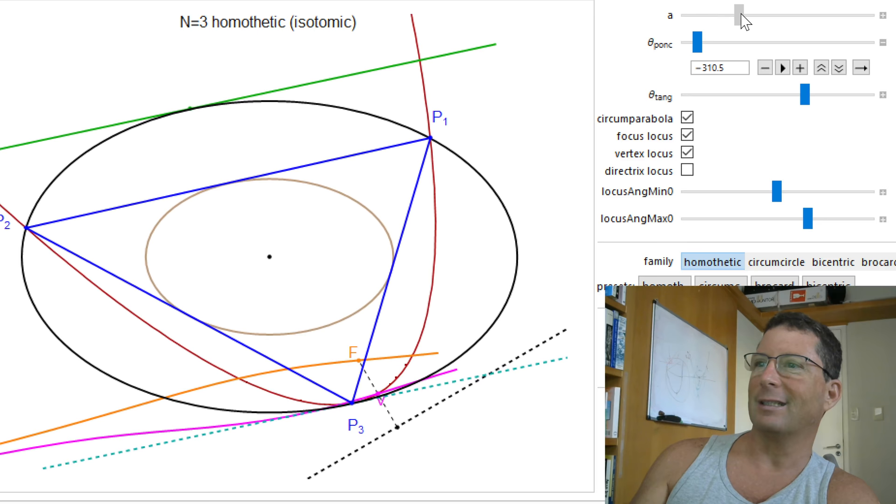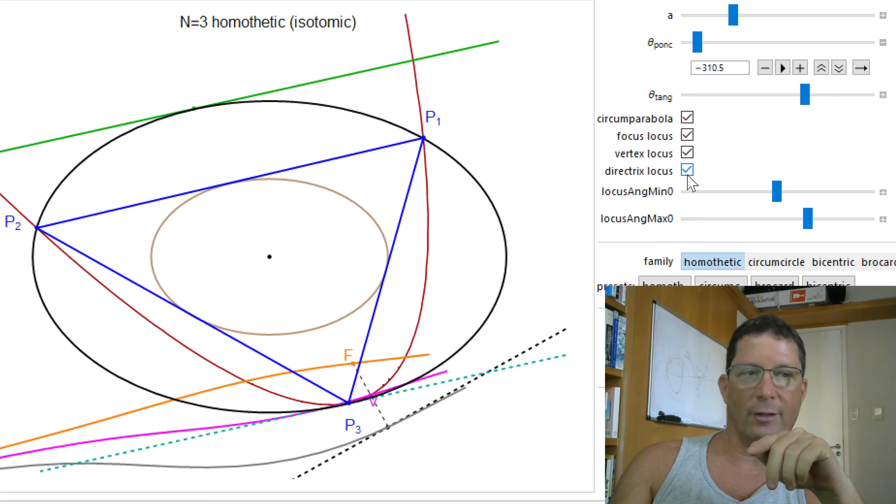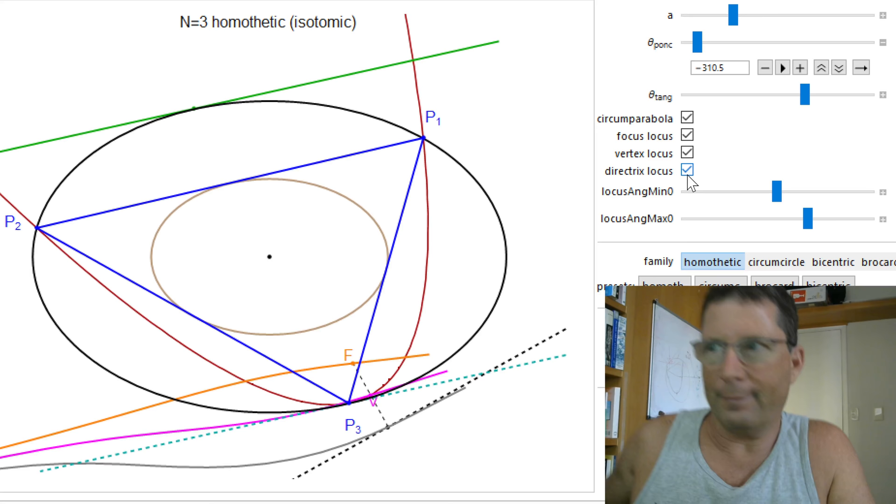So the locus of the vertex seems to be... And maybe this is obvious, but it seems to be tangent to the reflection of the green line about the center as well. And I can also show the locus of the directrix is this other curve. Also probably at least degree 9.